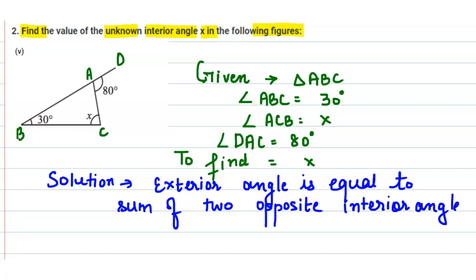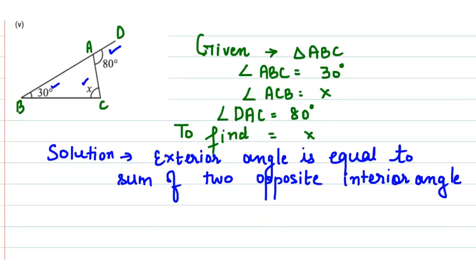In this triangle, 80 degrees is the exterior angle and the two opposite interior angles are 30 degrees and x. According to this property, the exterior angle of 80 degrees equals the sum of the two opposite interior angles, 30 degrees and x.